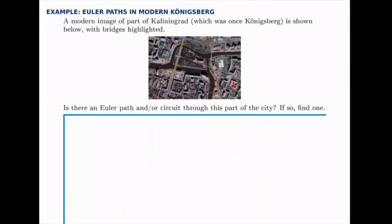In this example, we have a map of the modern-day city that used to be Königsberg, and we have the bridges highlighted.